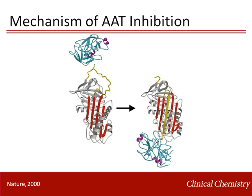Neutrophil elastase initially binds to AAT as a substrate and attempts to cleave it. But instead, a covalent bond is formed between the two molecules, and AAT executes protease activity, cleaving the active site of neutrophil elastase and completely displacing it to the opposite side of the molecule. The effect is irreversible for both proteins, which is why AAT is sometimes referred to as a suicide inhibitor.